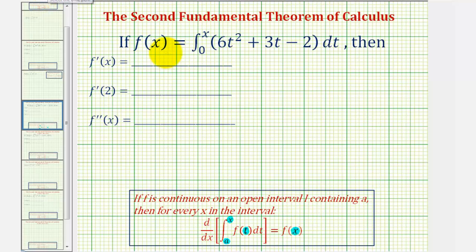Going back to our example, if the integral is equal to f, we can say that f prime of x would be equal to the derivative with respect to x of the integral. Notice how this integral does fit the form in our theorem, and therefore to find the derivative of this integral, we substitute x for t, which would give us 6x squared plus 3x minus 2.